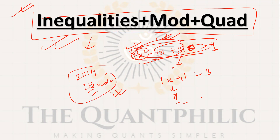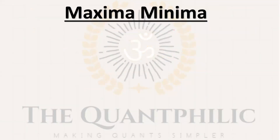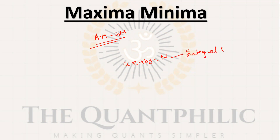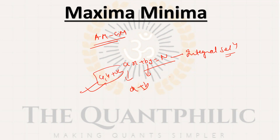Now let's come to maxima and minima — also an important topic. Here you should know AM-GM very well. Questions like: given ax + by = n, find the maximum possible value of a plus b where a and b are positive. Such questions may appear. There is a video on this topic on my channel as well.